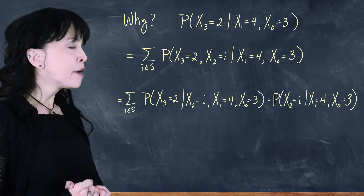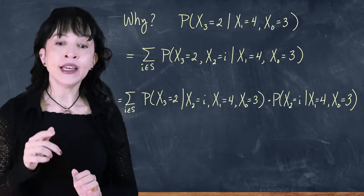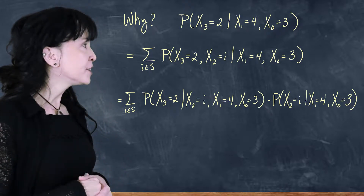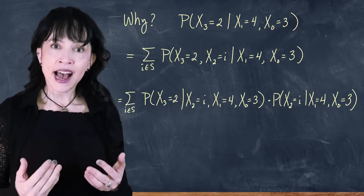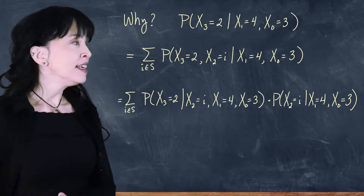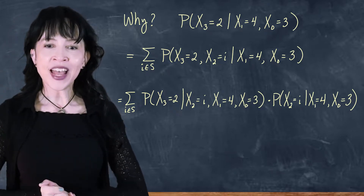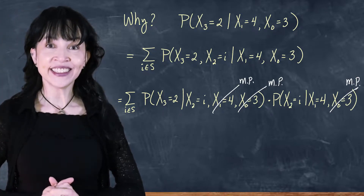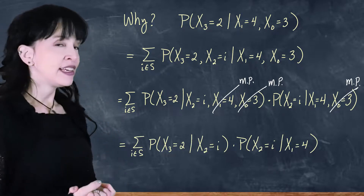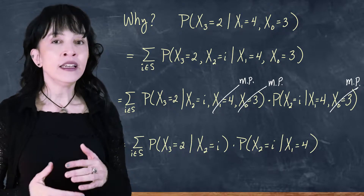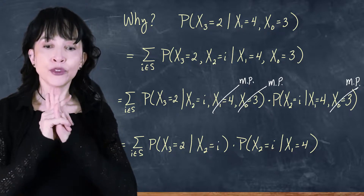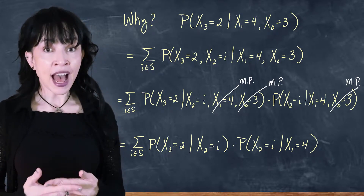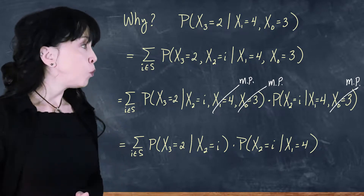So we're going to write this as the probability that x3 is two, given that x2 equals i, and that x1 equals four, and x0 equals three, times the probability that x2 equals i, given x1 equals four and x0 equals three. By the Markov property, I get to drop the earlier history, and we end up with the sum over all i in the state space of the probability that x3 equals two given x2 equals i, times the probability that x2 equals i given x1 equals four.